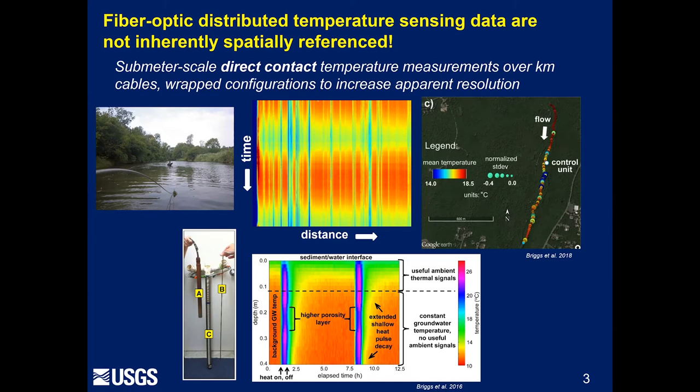Another thing you can do with fiber optics — and I think this was spoken about earlier — is wrap it around a core and increase the apparent resolution in the vertical, going from something like half a meter to a centimeter. In this case, we're heating up some of these vertical profilers that we put down into the stream bed to pick up on flux rates and different types of sediment with depth.